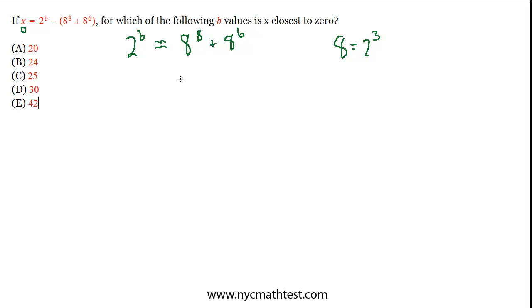So if we substitute 2 cubed for 8, then we can take the right side and say 2 cubed to the 8th plus 2 cubed to the 6th. And I'm just going to work on the right side here and get this into some simpler form. So this is 2 to the 24th plus 2 to the 18th.